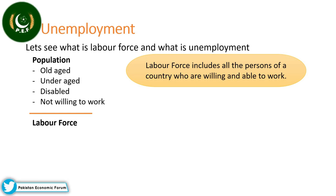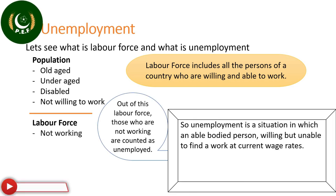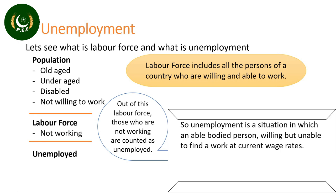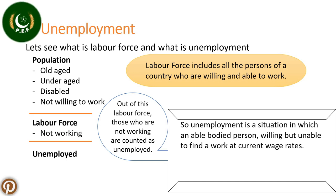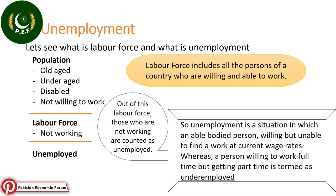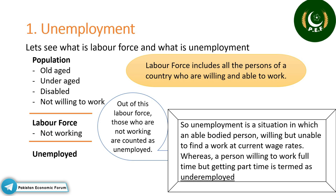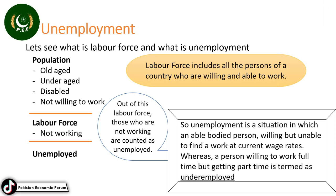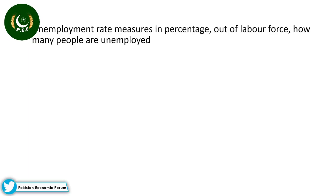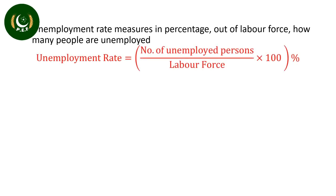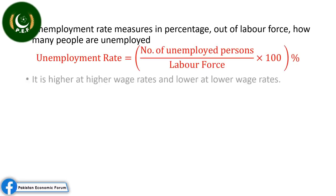Out of this labour force, those who are not working are counted as unemployed. Unemployment is a situation in which an able-bodied person who is willing but is unable to find work at the current wage rate. A person willing to work full-time but who gets part-time work is termed as underemployed. Unemployment rate measures, in percentage, out of labour force how many people are unemployed. Usually, unemployment is higher at high wage rates and lower at lower wage rates.